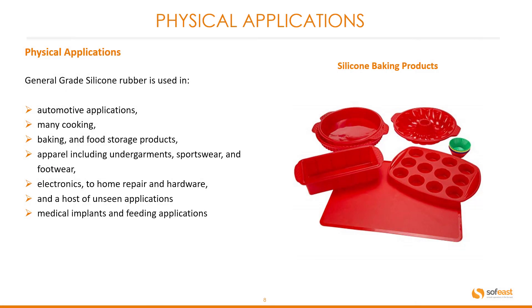Let's have a look at some more physical applications. General grade silicone rubber is used in automotive applications, many cooking applications, baking and food storage products, apparel including undergarments, sportswear and footwear, electronics, home repair and hardware, and a host of unseen applications. Medical implants and feeding applications were also mentioned earlier.